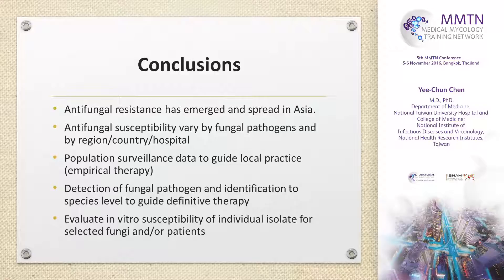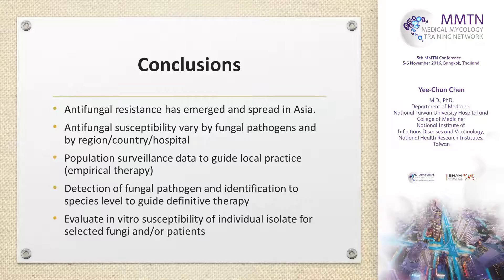In conclusion, antifungal resistance has emerged and spread in Asia. Antifungal susceptibility varies by fungal pathogen and by region, country, and hospital. We need population surveillance data to guide local guidelines, especially for empirical agents. For precision medicine for individual patients, we need to detect the fungal pathogen and identify to the species level to guide definitive therapy. For select fungi and patients, we need to evaluate in vitro susceptibility even without clinical breakpoints — at least we can incorporate this objective measurement, integrate with TDM and other data, to better guide treatment strategy for individual patients. Thank you for your attention.